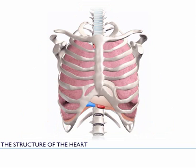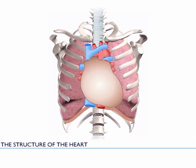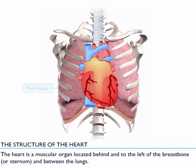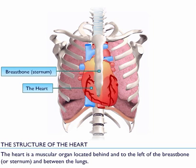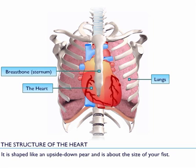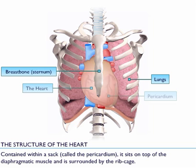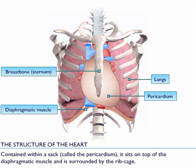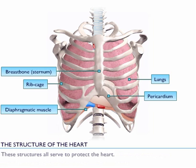The structure of the heart. The heart is a muscular organ located behind and to the left of the breastbone or sternum, and between the lungs. It is shaped like an upside-down pear and is about the size of your fist. Contained within a sac called the pericardium, it sits on top of the diaphragmatic muscle and is surrounded by the ribcage. These structures all serve to protect the heart.